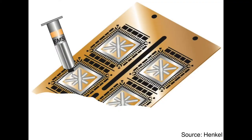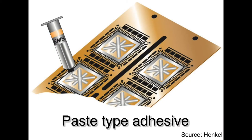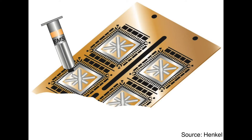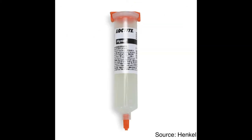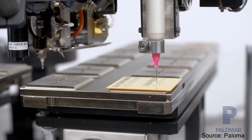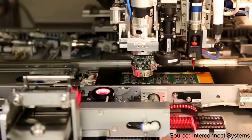The most popular die attach material is a paste-type adhesive thanks to its convenience and performance. It is also usually called epoxy because epoxy is the most popular polymer material for paste-type die attach adhesive. It is packaged on syringe and dispensed on substrate using die attach machine. After that, sawn die is attached on dispensed adhesive.